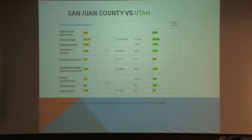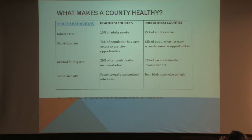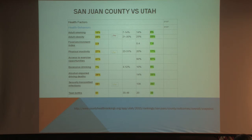Social associations — that's how you relate to other people, and they seem to be doing well down there. I think they live in large families, large households. Looking at health behaviors — tobacco use, diet and exercise, alcohol and drug use, sexual activity — you can see the characteristics of the healthiest counties versus the unhealthiest. Adult smoking — not a big difference. Obesity — I was surprised that it was the same for San Juan County and the rest of Utah.